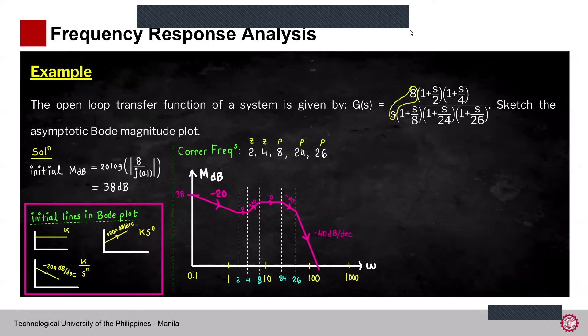That's how we sketch the asymptotic Bode magnitude plot. To summarize: the contribution of a zero is plus 20 dB per decade, and the contribution of a pole is minus 20 dB per decade to the actual slope.